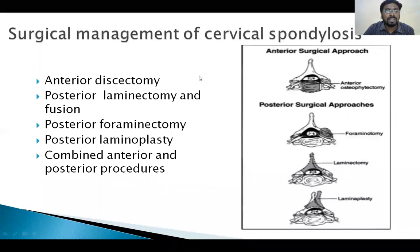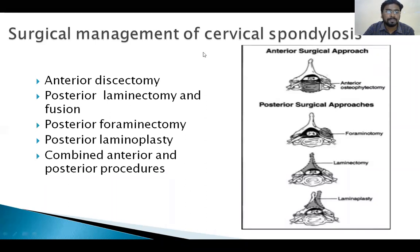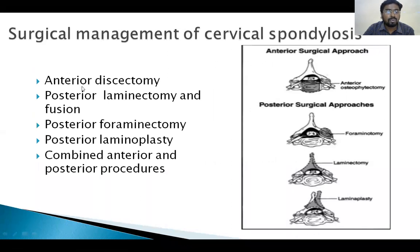When conservative treatment fails, what are the options for surgical procedures? There are different types of surgical procedures for cervical spondylosis: anterior discectomy, posterior laminectomy with fusion, posterior foraminectomy and foraminotomy, posterior laminoplasty, or combined anterior and posterior procedures.